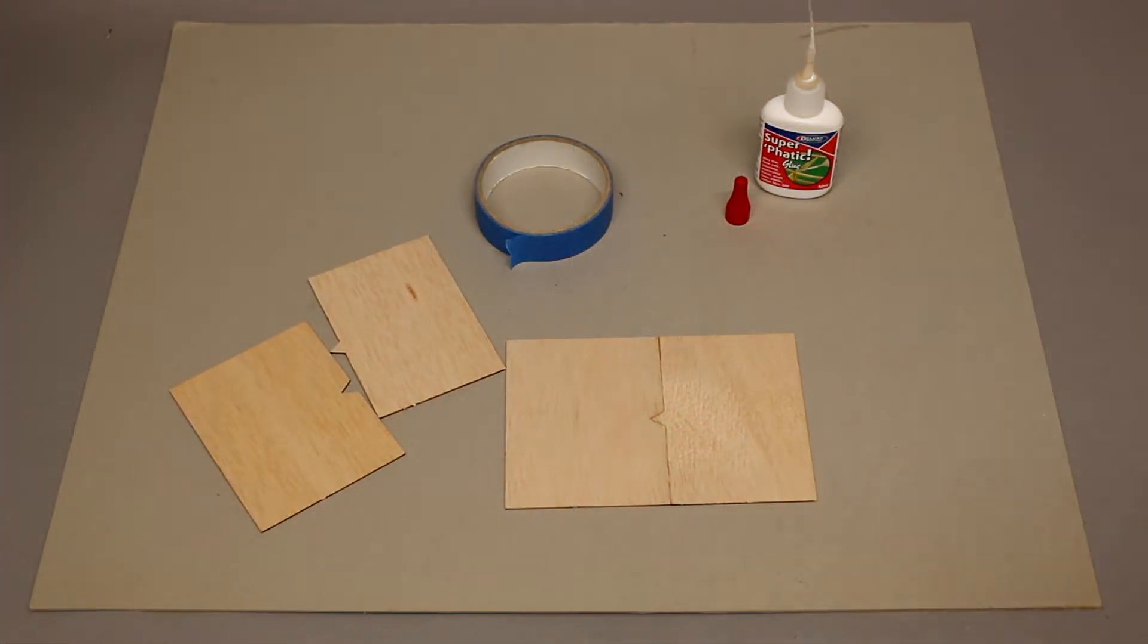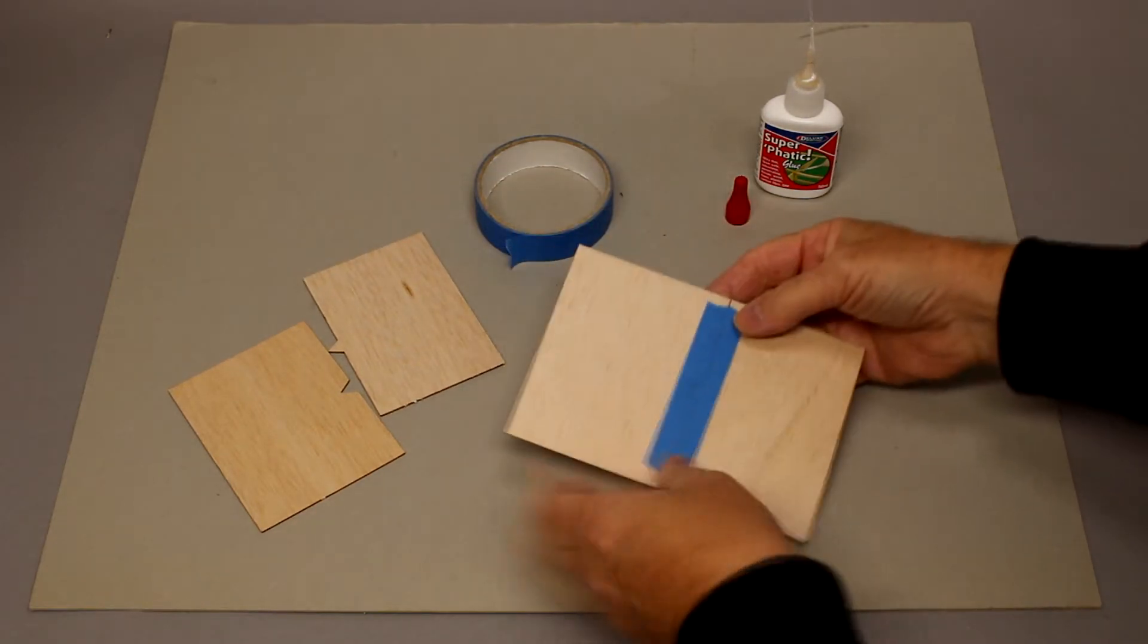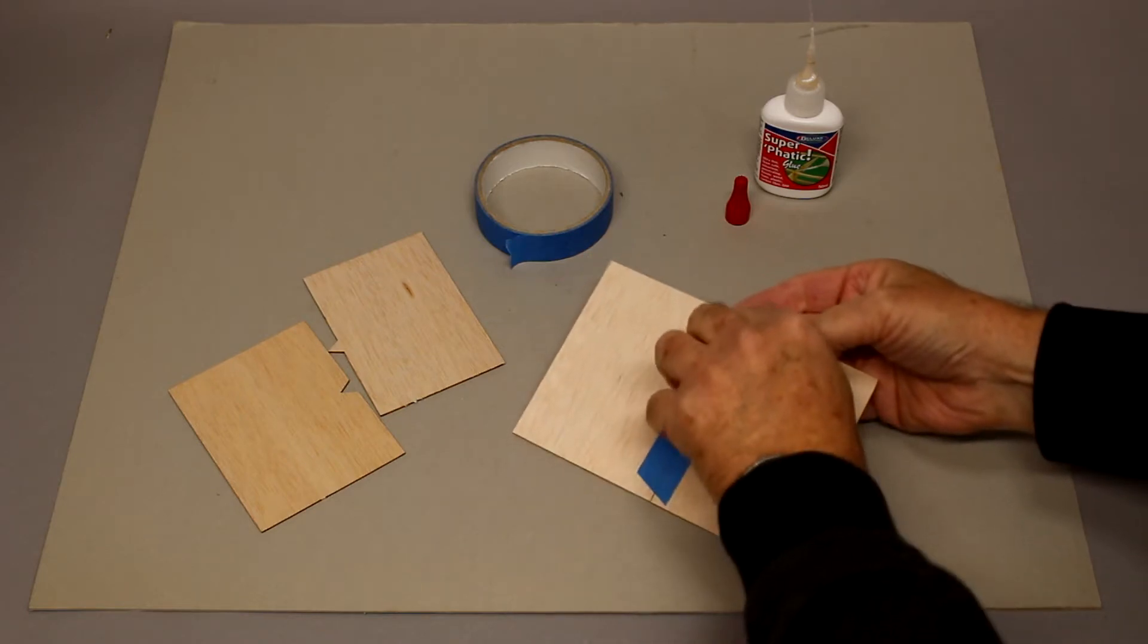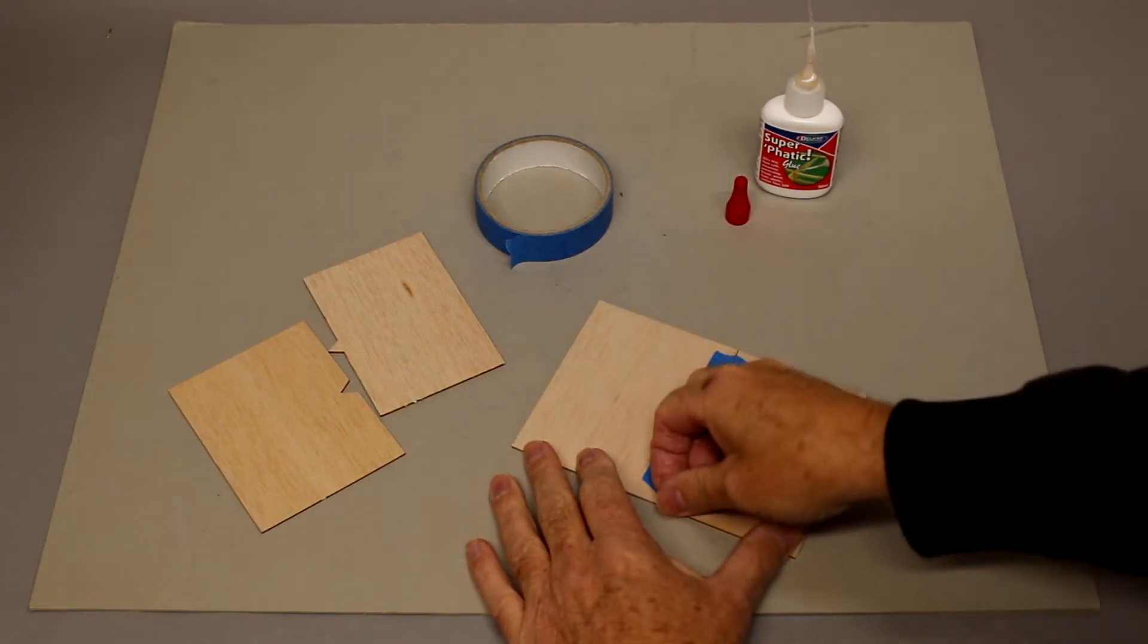Okay, so we've left the sheeting to dry for 10 minutes and all we need to do now is remove the masking tape from the back. Just remove this masking tape.